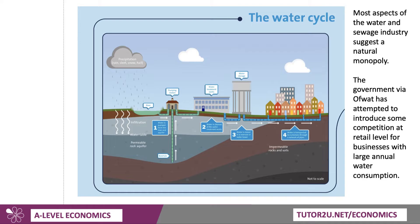The water cycle — basically lifted from a geography website — starts with precipitation and ends with things like pumping stations, water treatment works, and water storage, and of course the network of pipes all the way through to households and businesses.